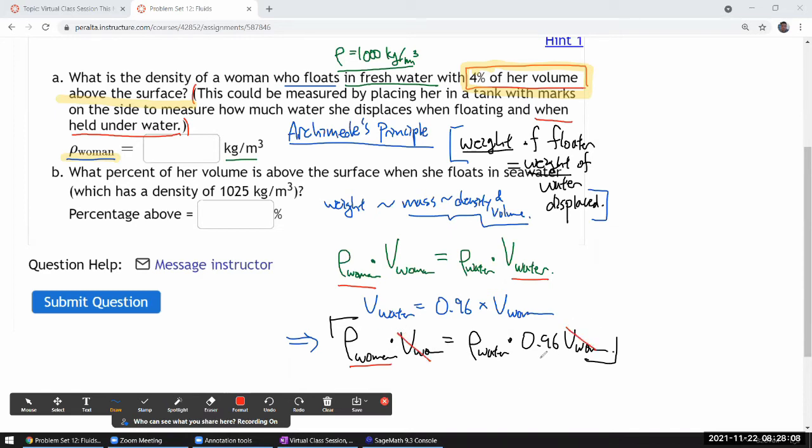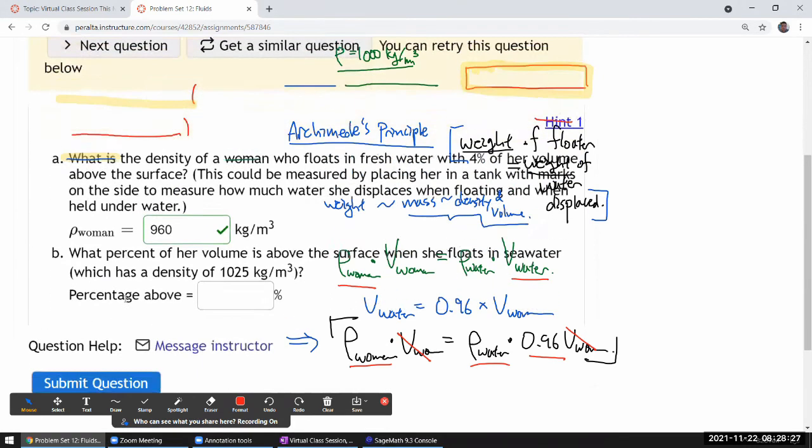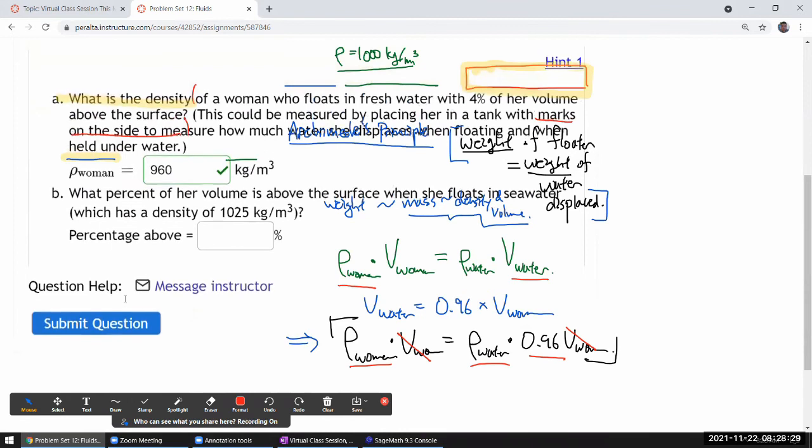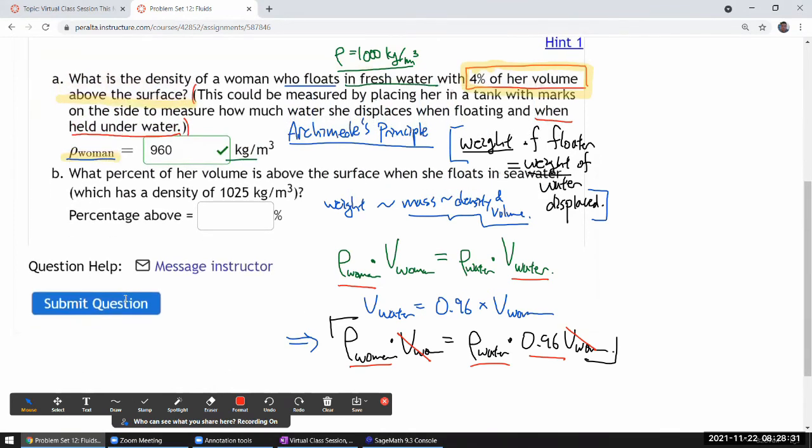So, we get, density of woman is 96% of density of water. So, I think I can actually do that in my head. 96% of a thousand is 960 kilogram per cubic meter. So, yeah, that's part A. Let me just make sure I got the question right. And then, the part B is asking, what percent of her volume is above surface when she floats in seawater? Okay.